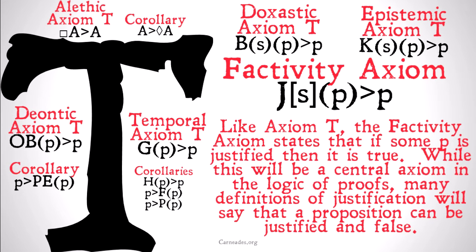Like axiom T, the factivity axiom states that if some P is justified, then it is true. While this will be a central axiom in what's known as the logic of proofs — which basically says that if we can prove something it must be the case — many definitions of justification are going to say that a proposition can be justified and also be false. It seems intuitively that we can be very justified in believing something but have actually ended up believing something that's not the case.